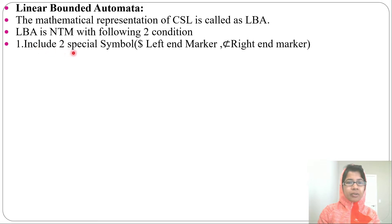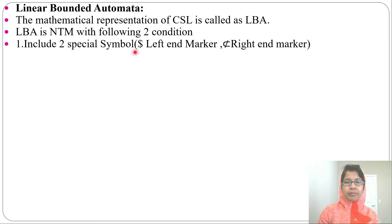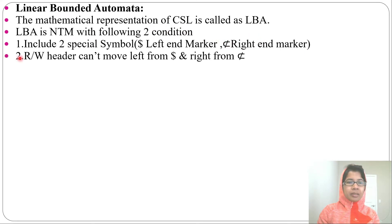First condition: it includes two special symbols. One is a left-hand marker, another is a right-hand marker. In a Turing machine we use blank, but here there are two separate symbols for the left-hand marker and for the right-hand marker. The second condition is the read-write header cannot move left from the left-hand marker and cannot move right from the right-hand marker.